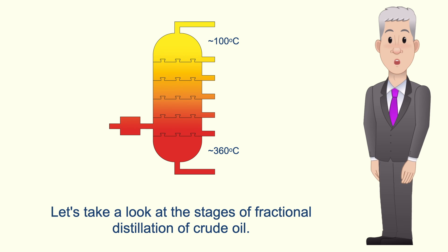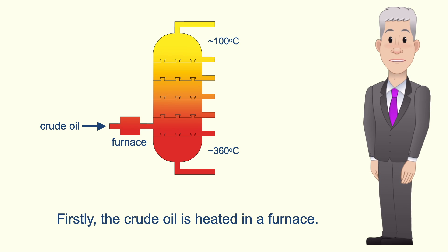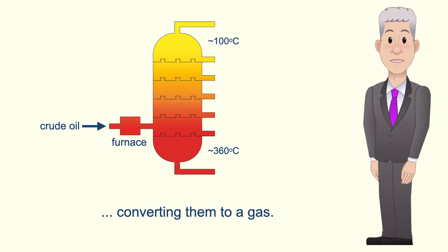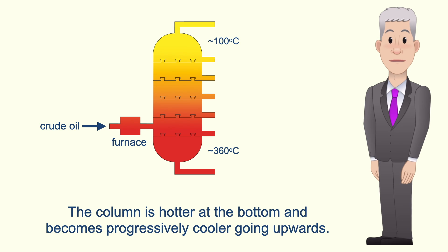Let's look at the stages of fractional distillation of crude oil — it's very important that you learn these stages. Firstly, the crude oil is heated in a furnace. The temperature of the furnace is hot enough to boil a lot of the alkanes in the crude oil, converting them to a gas. Next, the crude oil vapors and liquid pass into the fractionating column. The column is hotter at the bottom and becomes progressively cooler going upwards.